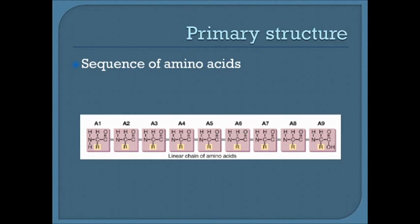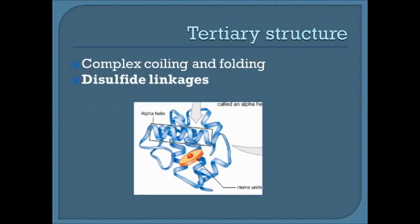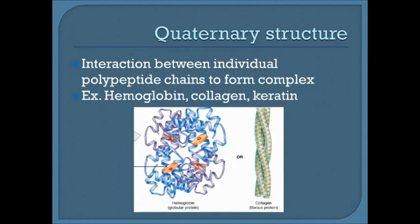Protein structure has four levels. The primary structure is the linear chain of amino acids and their unique sequence. The secondary structure results from hydrogen bonding, forming alpha helices and beta pleated sheets. The tertiary structure is the 3D structure from coiling and folding of these secondary structures, including permanent disulfide linkages. The quaternary structure is the interaction between individual polypeptide chains to form a larger complex — examples include hemoglobin, collagen, and keratin. Some proteins don't have all four structures.